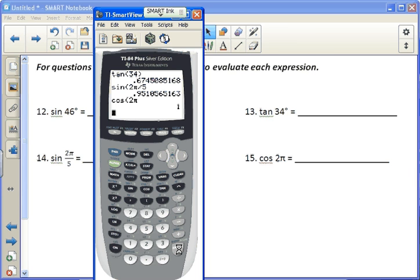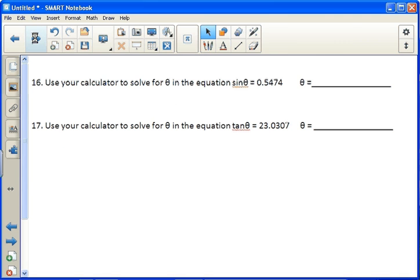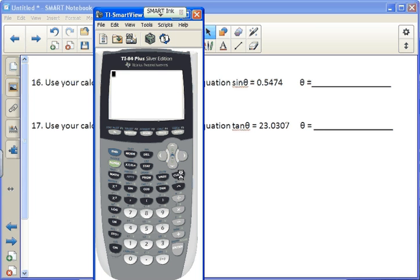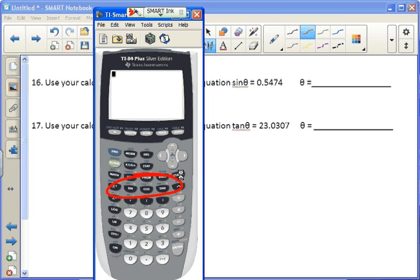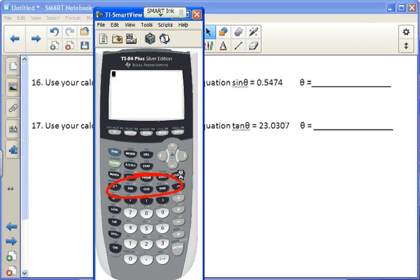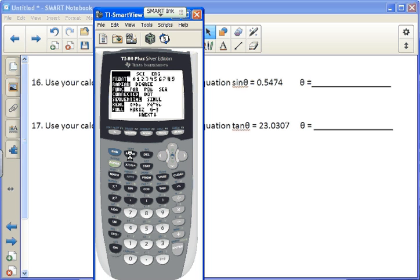16, use your calculator to solve for theta. To solve for the angle, we have to use the arc sine, arc cosine, and arc tangent, which are the sine to the negative 1, cosine to the negative 1, and tangent to the negative 1 you see right above the sine, cosine, and tangent buttons. So for number 16, to get that we need to do second sine, which is arc cosine of .5474. And I'm in the wrong mode, so always got to be careful there.